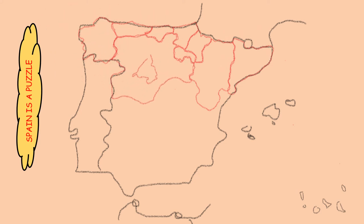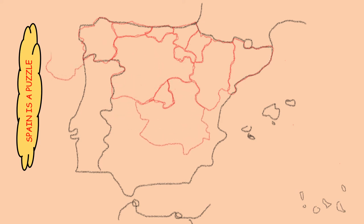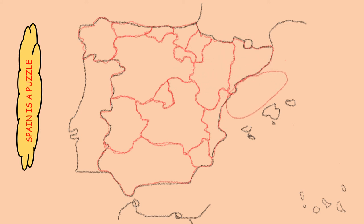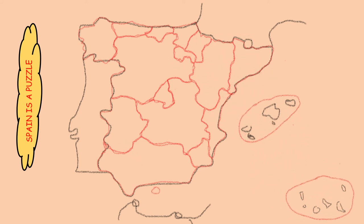Castilla y León, Comunidad de Madrid, Castilla-La Mancha, Extremadura, Comunidad Valenciana, Región de Murcia, Andalucía, Illes Balears, Canarias, Melilla, and Ceuta. These are the different pieces of Spain.